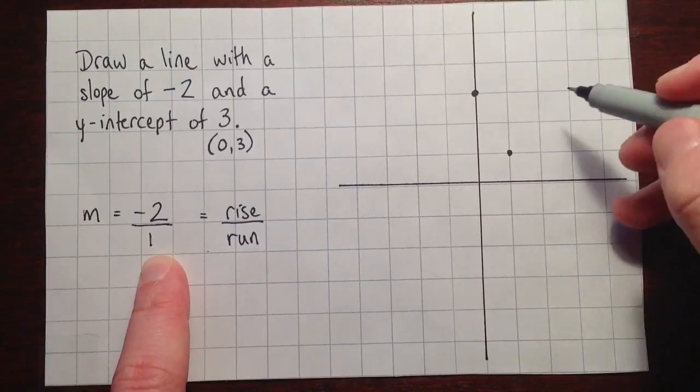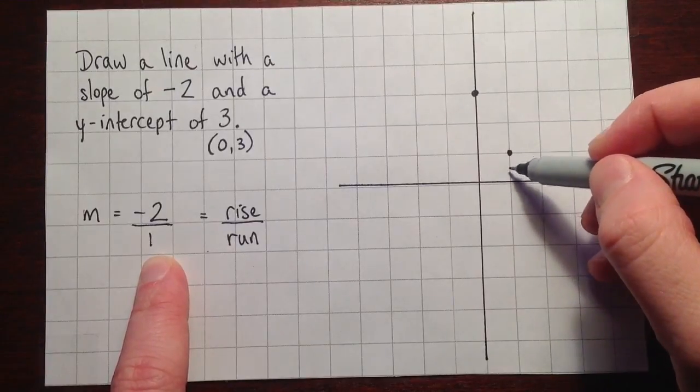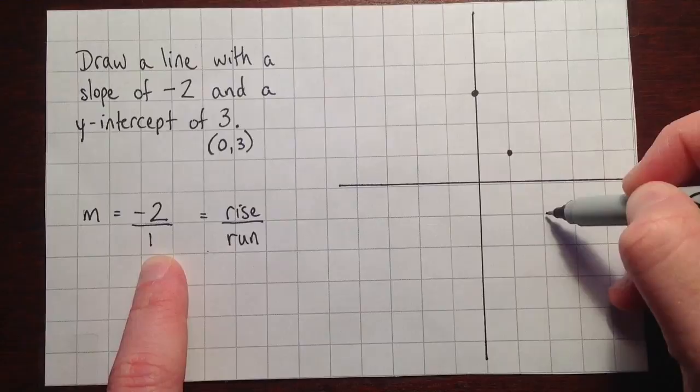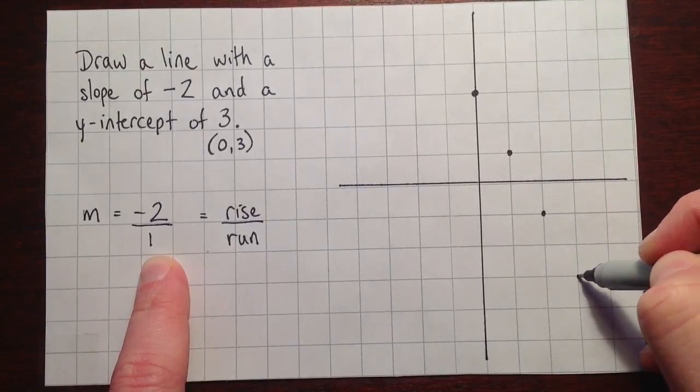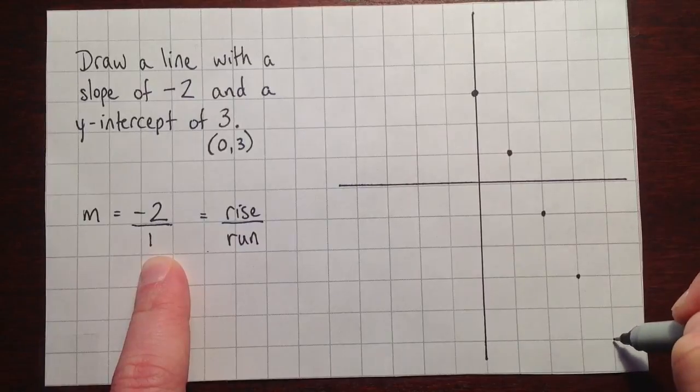So we'll go through that point. And we can do it again, a rise of negative 2 and a run of 1, and we go through that point. It's kind of nice to do it until you get to the edge of your graph.